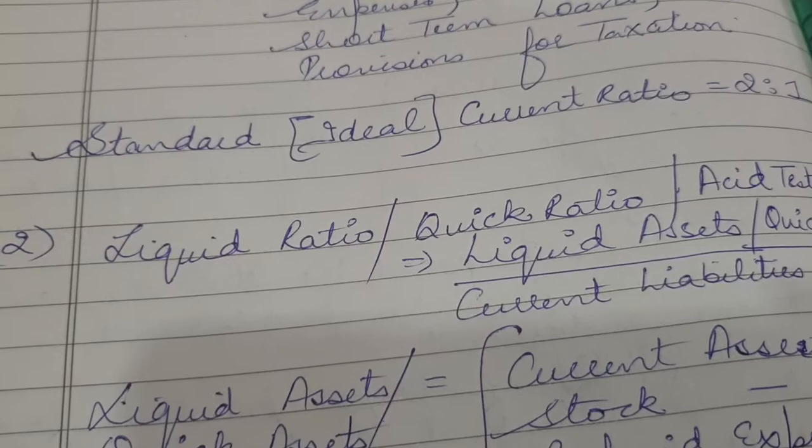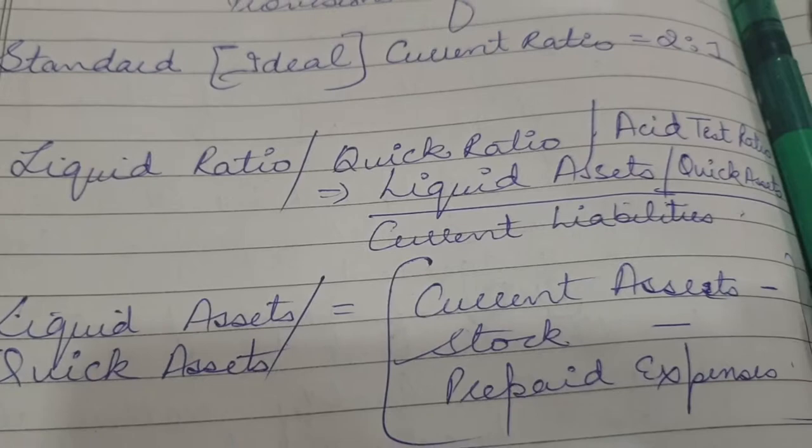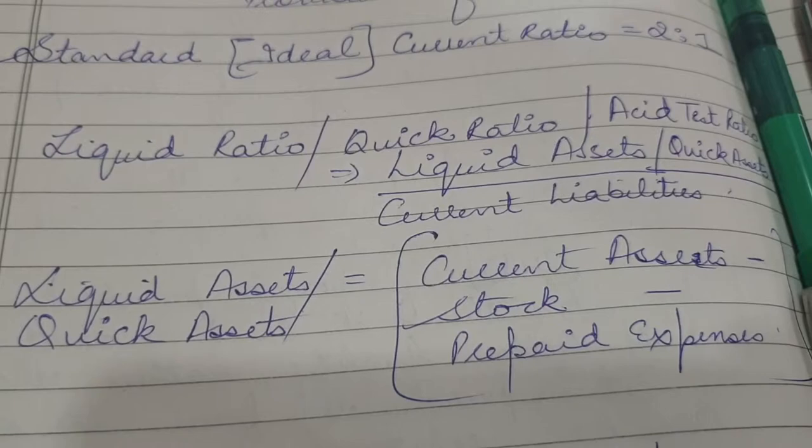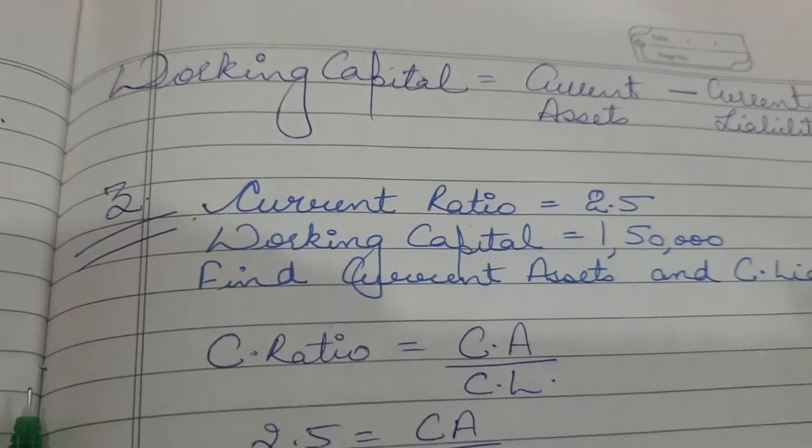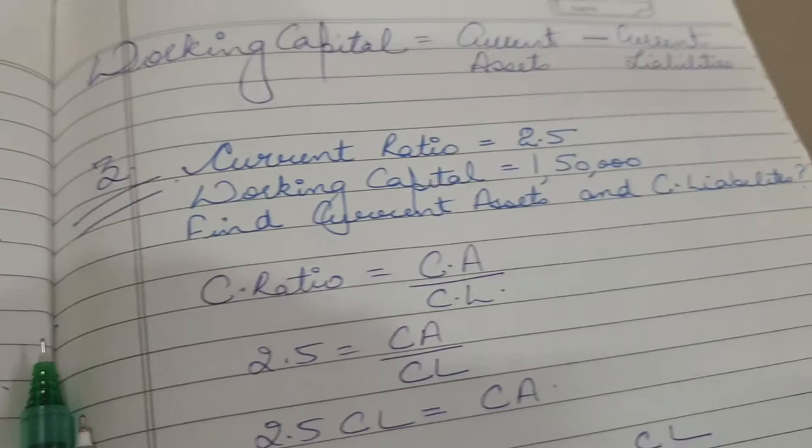The next is liquid ratio, also known as quick ratio or acid test ratio. It is liquid assets (or quick assets) divided by current liabilities. Liquid assets means current assets minus stock minus prepaid expenses. The next concept is working capital, which is current assets minus current liabilities. Now we will do the questions from T.S. Grewal's book.